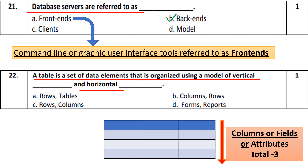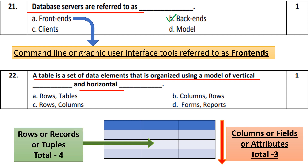If we talk about horizontally, the total number of columns here are three. Vertically we have columns, also called fields and attributes. Horizontally we call them rows, and rows are also called records and tuples. In this table, the total number of rows is four. So the correct answer for question 22 is option number B: vertically columns, horizontally rows.